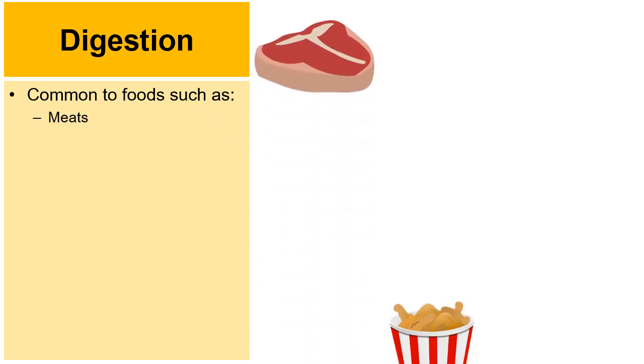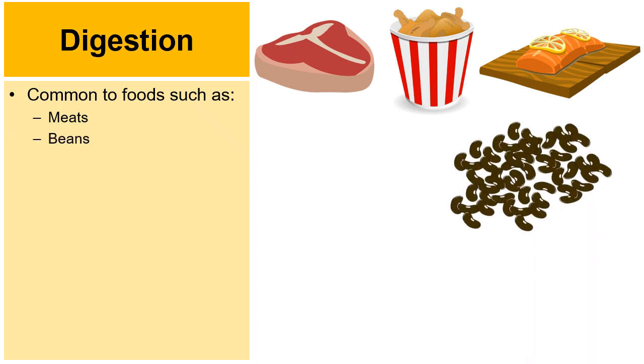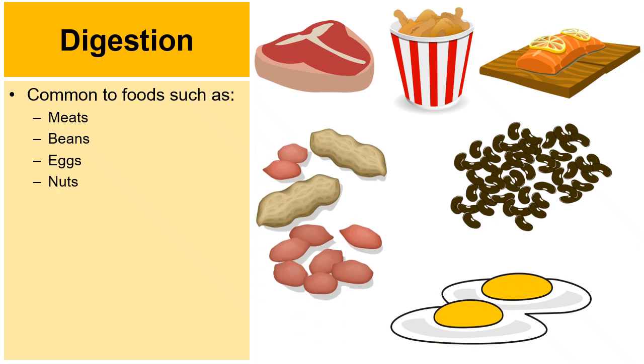Well, we know that lots of foods are high in proteins. And so certain foods were proteins that are more common. For example, really any kind of meats, whether it's a steak, whether it's any kind of chicken, maybe it's fish. Also, beans tend to be higher in proteins as are eggs and as are nuts.